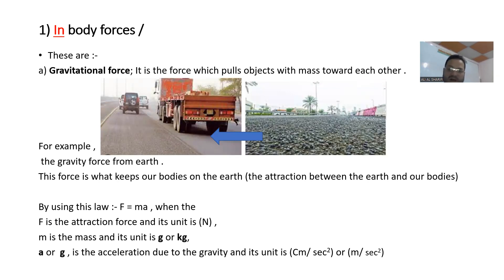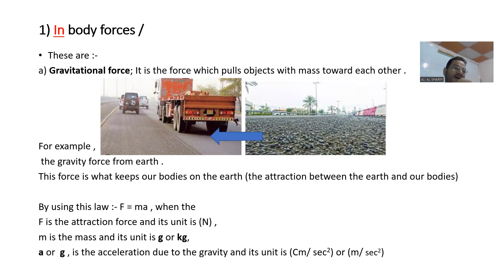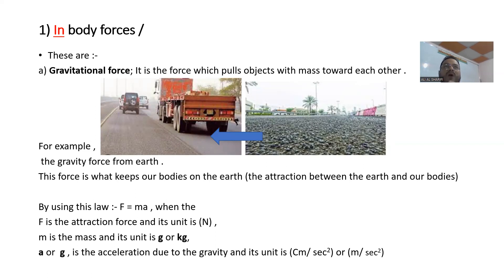The most common example for us is how we can walk on this planet. Why do we walk like that? What is the effect on our masses to make us walk like that? It is the gravitational force of our planet on our bodies, because our planet has a huge amount of mass.